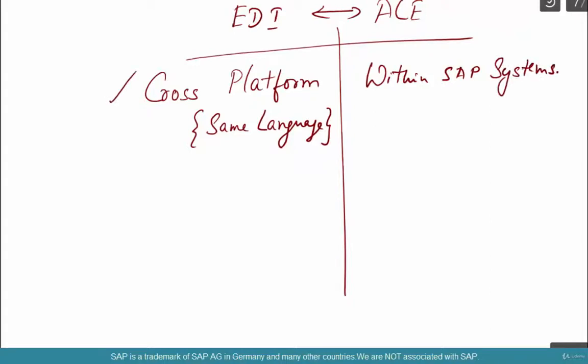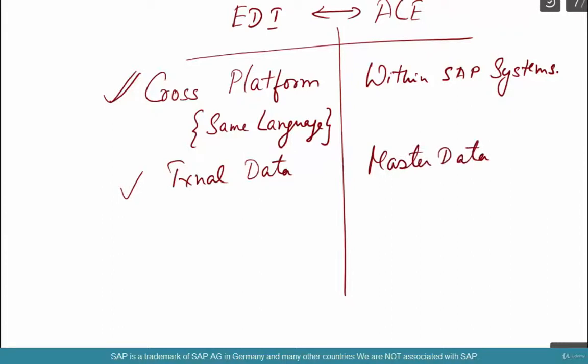ALE is typically used for transactional data, while EDI is mostly used for master data. That's not to say that master data distribution cannot be used with EDI, or that transactional data cannot be used with ALE. But this is typically how usage goes in the industry.